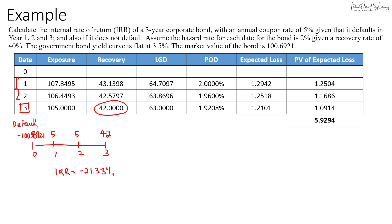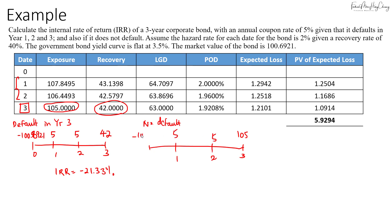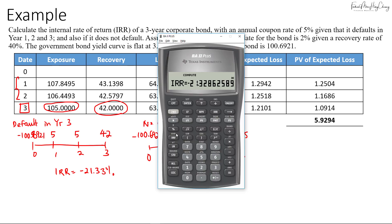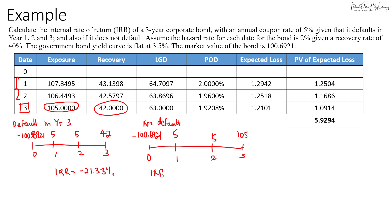You can see the IRR becomes less negative the later the default occurs. Now if the bond doesn't default, instead of forty-two we receive one hundred and five in year three, plus five dollars in years one and two, with an investment of negative one hundred point six nine two one. Changing the last cash flow from forty-two to one hundred and five, going to IRR and pressing compute gives four point seven four seven percent.